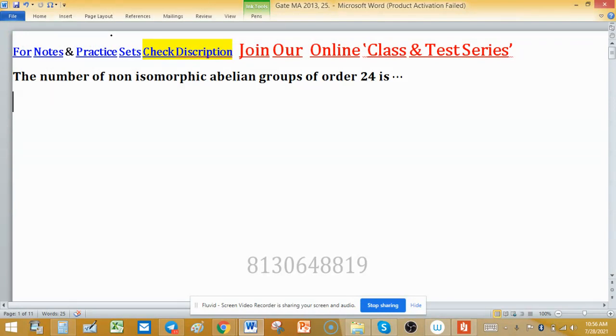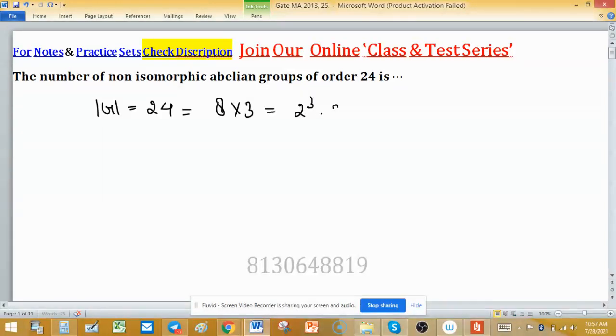How to use partition of some number? As the order of the group is given as order of G is 24, we can write 24 as 8 into 3, means 2 raised to the power 3 into 3 raised to the power 1.